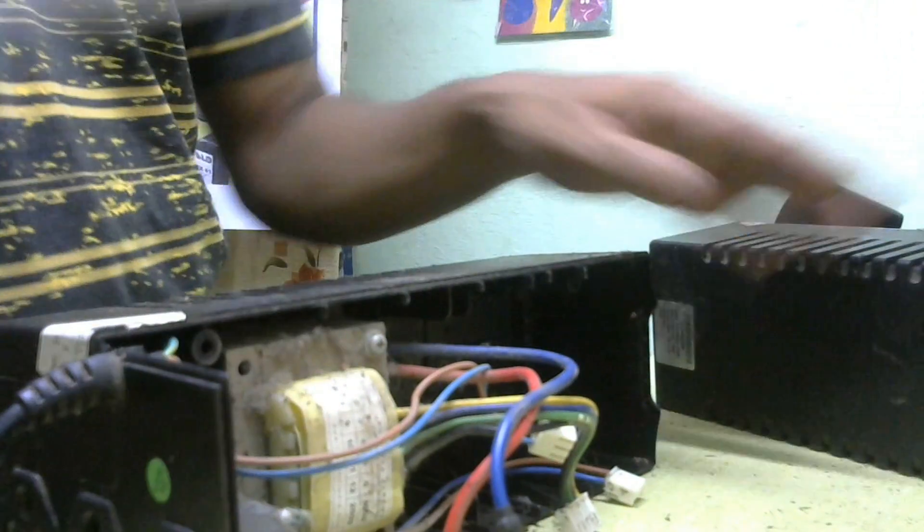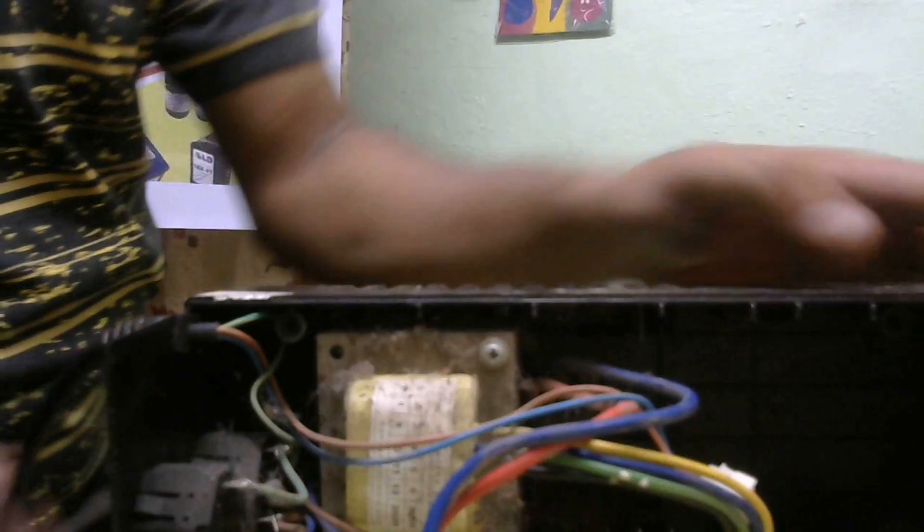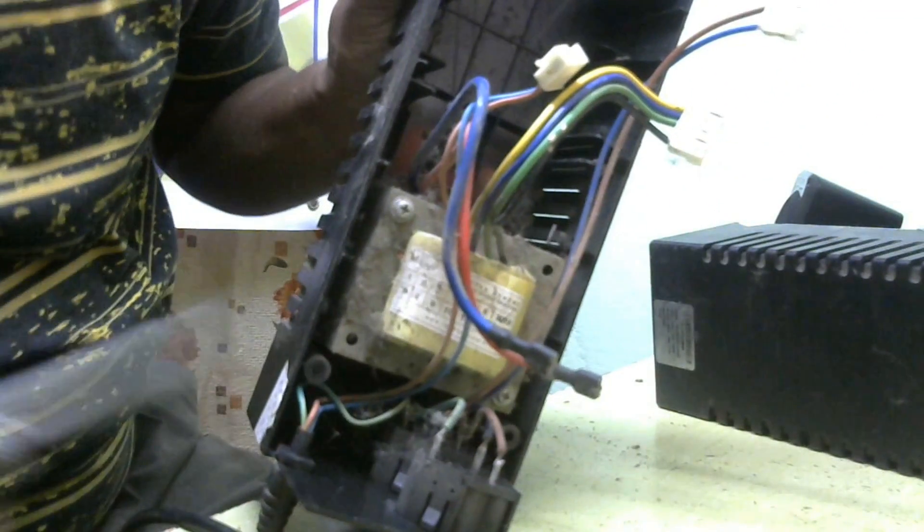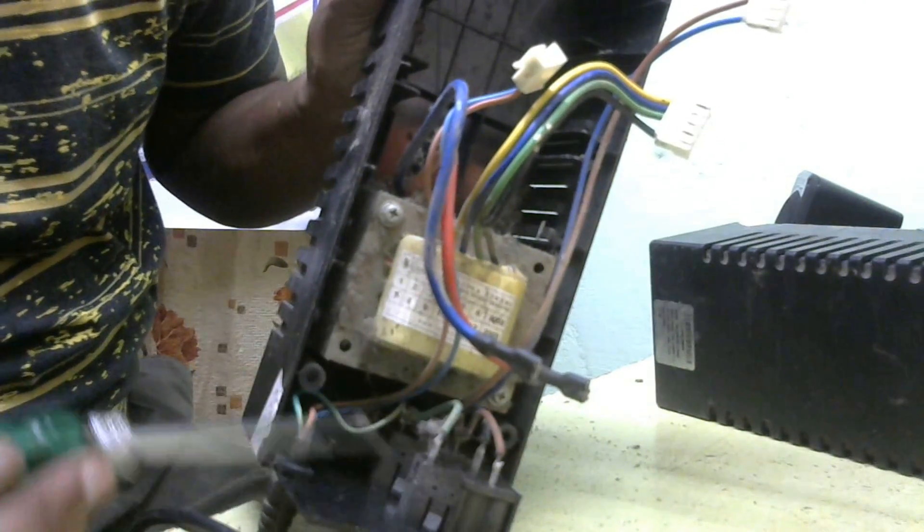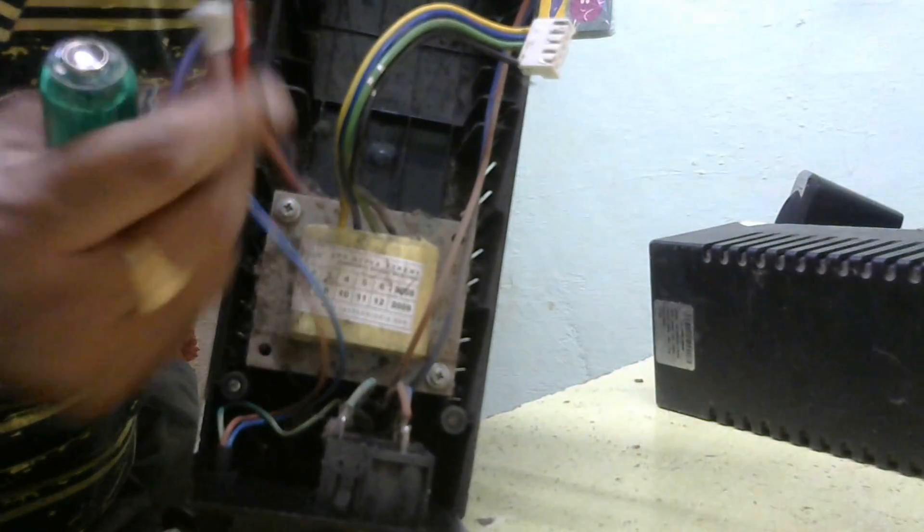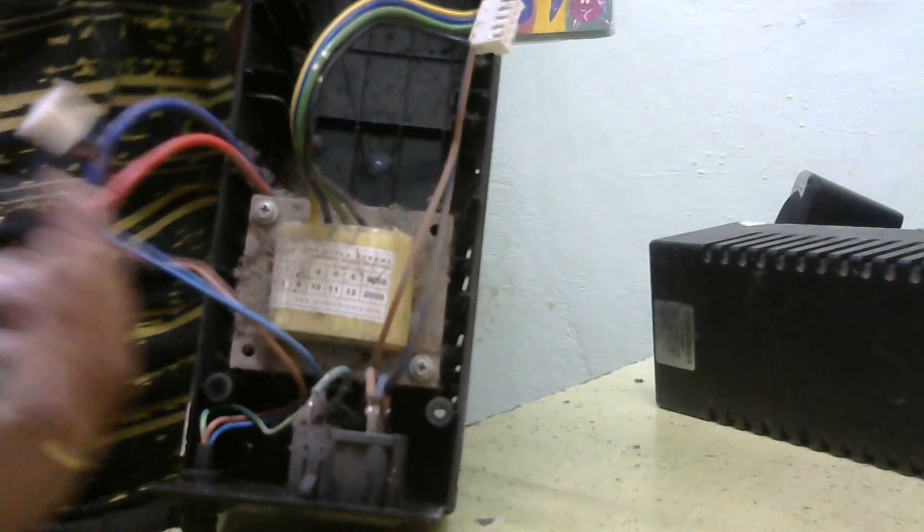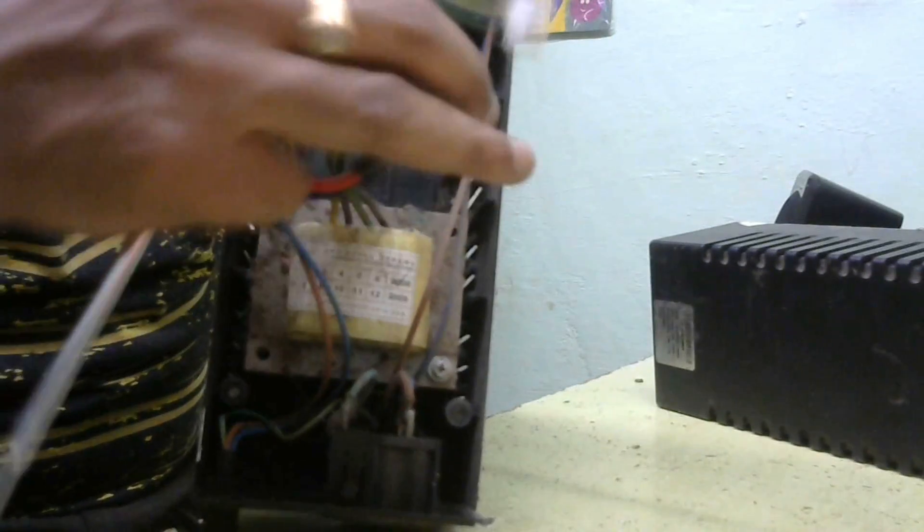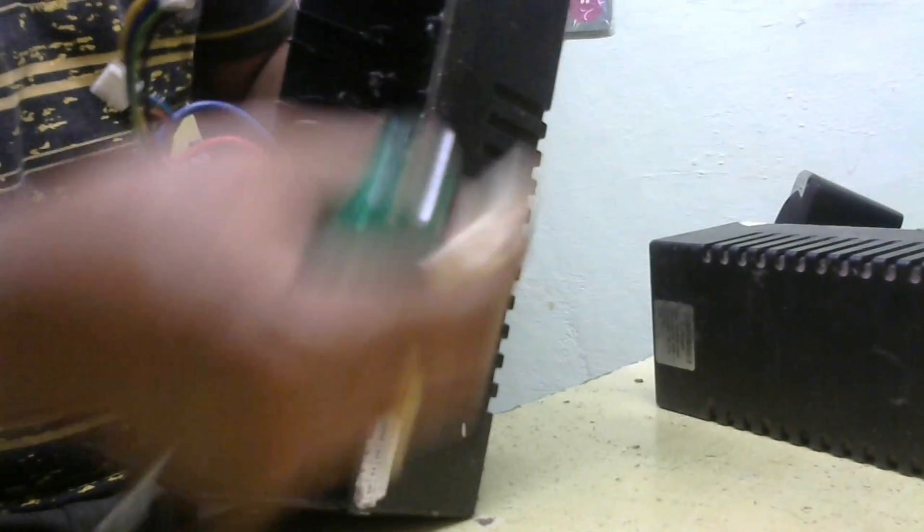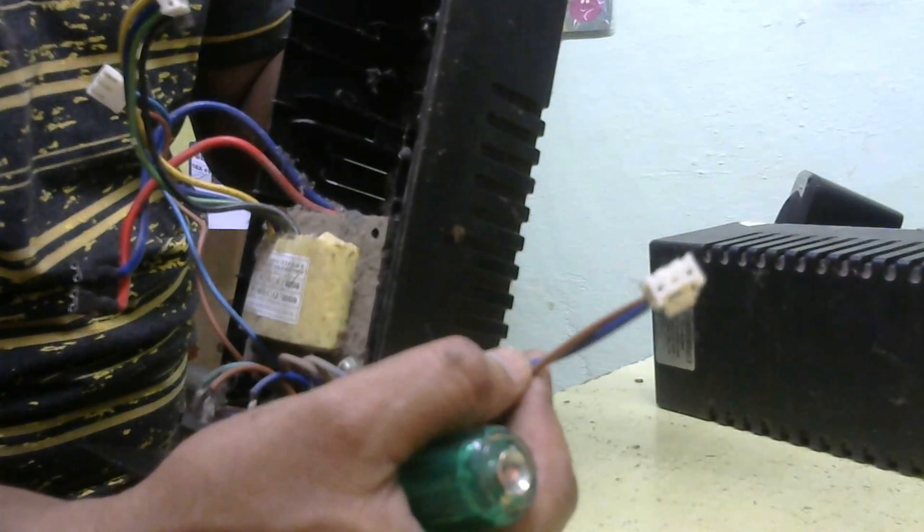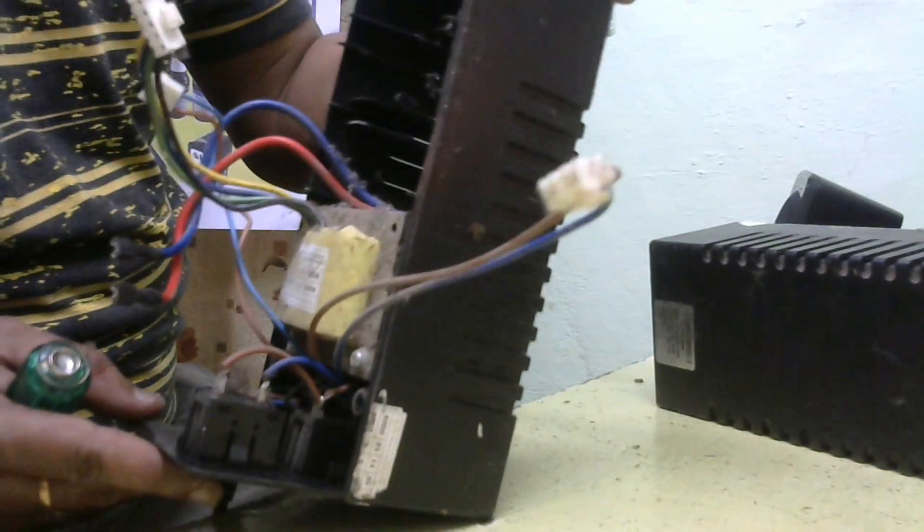Now I will show the power supply transformer. There are three output sockets giving outputs to the circuit. The output voltage is 12 volts, 3 amps. This circuit voltage powers the board. I will check if power is coming or not.